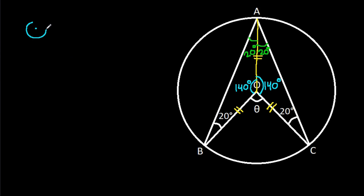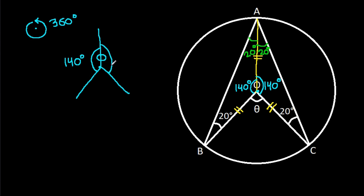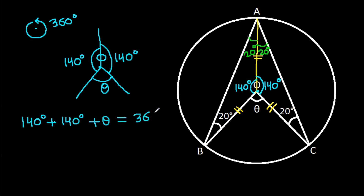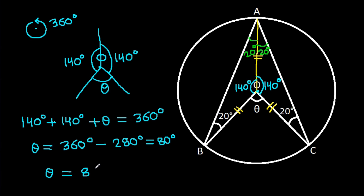The angle around any point is 360 degrees. So at point O, angle AOB is 140 degrees and angle AOC is 140 degrees. Therefore, 140 plus 140 plus theta equals 360 degrees, giving theta equal to 360 minus 280, which is 80 degrees. So theta is 80 degrees.